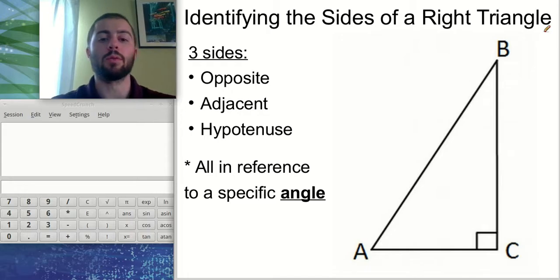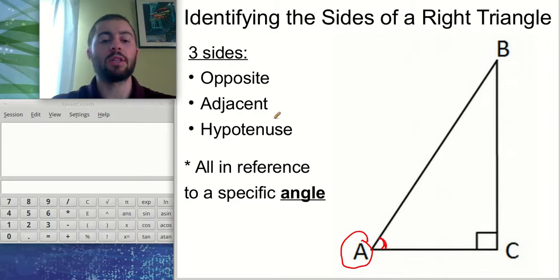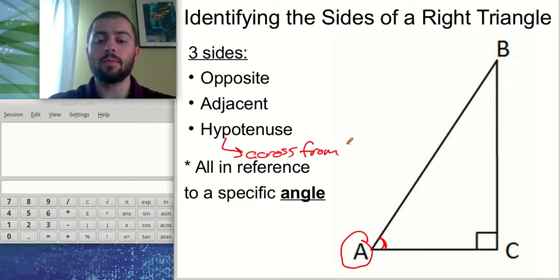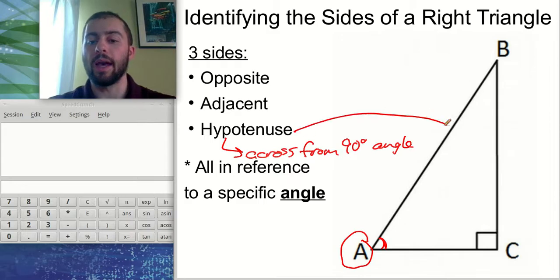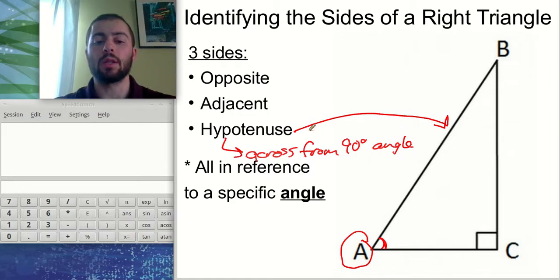The first thing we need to be able to do is identify the three sides of a right triangle. This sounds simple but it's actually really important when trying to solve these problems. All of the sides of a triangle are going to be in reference to a specific angle. If we look at angle A, one side is opposite, one is adjacent, and one is the hypotenuse. The hypotenuse is always the easiest side because it's across from the right angle — in this case, side AB, since angle C is the right angle.